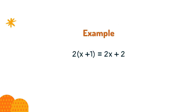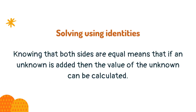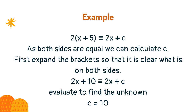For example, the equation shown is an identity. Knowing that both sides are equal means that if an unknown is added, then the value of the unknown can be calculated. As both sides are equal, we can calculate c.